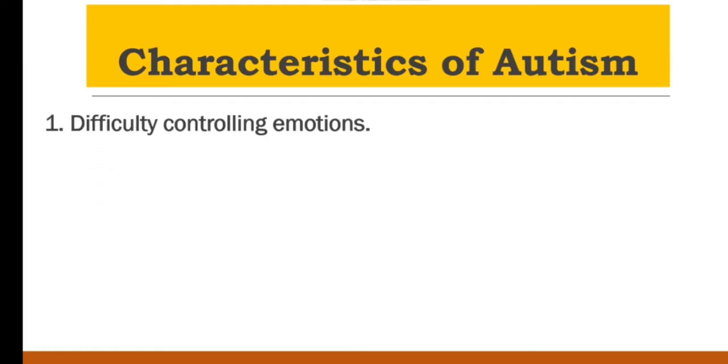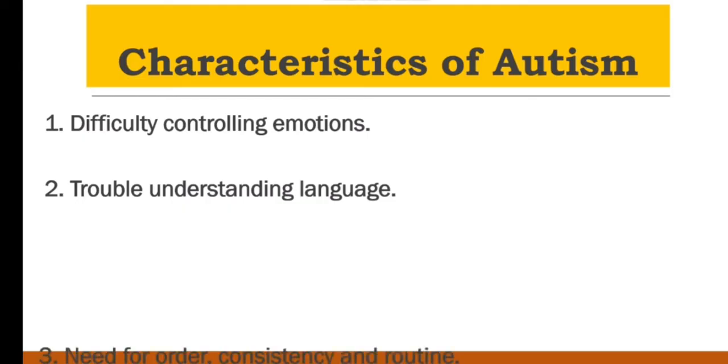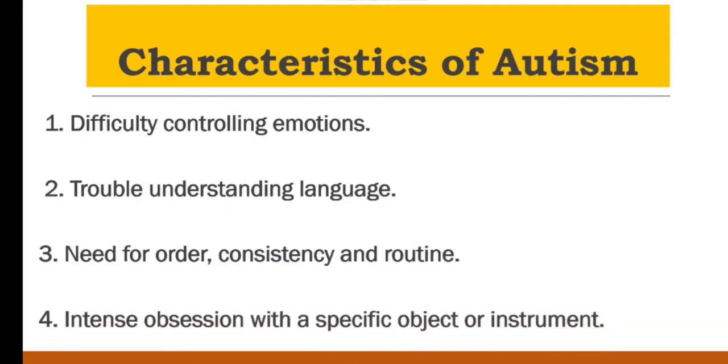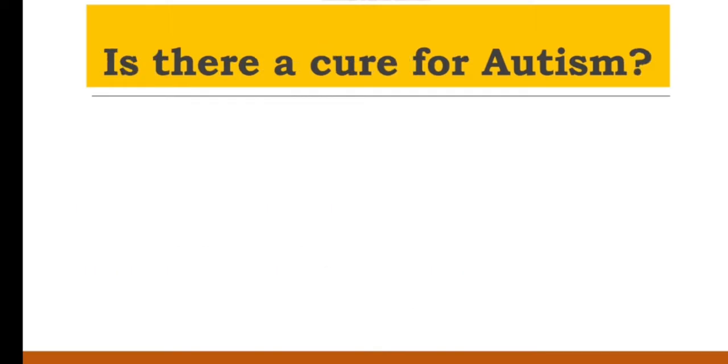Some characteristics of autism: 1. Difficulty controlling emotions, 2. Trouble understanding language, 3. Need for order, consistency and routine, 4. Intense obsession with a specific object or instrument.